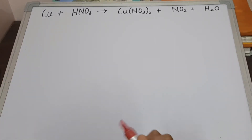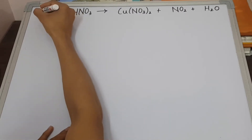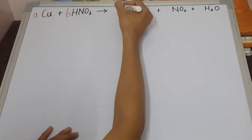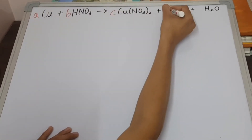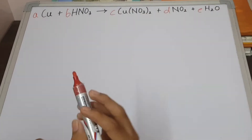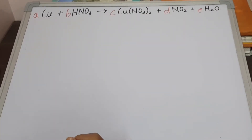So how we can begin — first of all let's write the alphabets here. We have A, B, C, D, and E. Now the next thing is that we have to make the equations out of it.